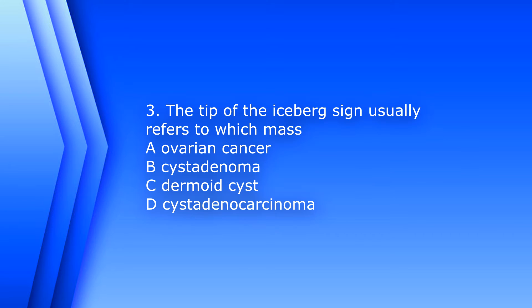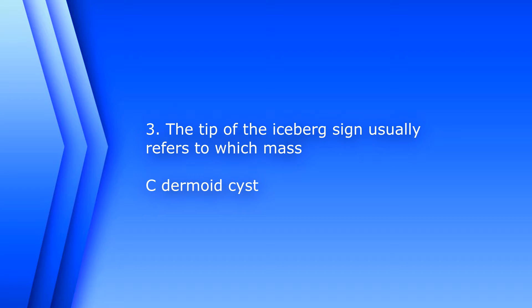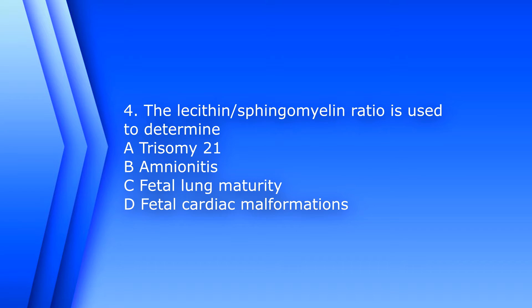Question 3. The tip of the iceberg sign usually refers to which mass? A. Ovarian cancer. B. Cystadenoma. C. Dermoid cyst. D. Cystadenocarcinoma. The answer is C. Dermoid cyst.